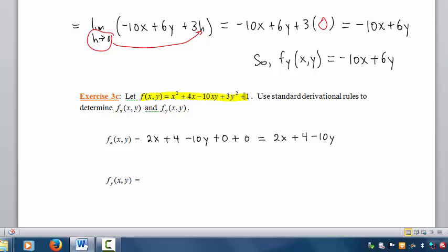So the derivative of x squared with respect to y is 0. The derivative of 4x with respect to y is 0. The derivative of negative 10xy with respect to y is negative 10x. The derivative of 3y squared with respect to y is 6y. And the derivative of 1 with respect to y is 0. We get the same result as from Exercise 3b.